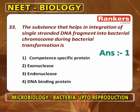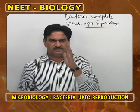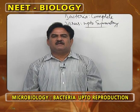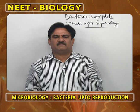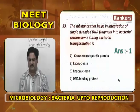The substance that helps in the integration of a single-stranded DNA fragment into the bacterial chromosome during bacterial transformation is competence-specific protein — not exonuclease (which only cuts DNA), not endonuclease, not DNA binding proteins. The competence-specific protein makes the DNA enter the bacterial cell and fuse with the host bacterial DNA in an integrated form.